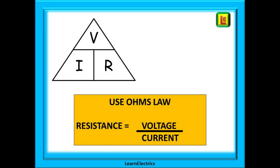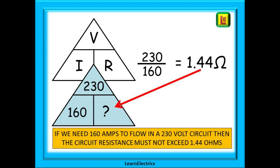A little bit of maths now. Ohm's law tells us that the resistance of a circuit equals the voltage divided by the current. We have shown here the familiar Ohm's law triangle. Inserting the two numbers that we know, we have 230V over 160A. We always use the nominal voltage for these calculations and not the actual measured voltage — it is the standard figure quoted in tables and books. So 230V divided by 160A gives us 1.44 ohms. If the resistance is equal to or less than 1.44 ohms then at least 160A of fault current will flow and the circuit will disconnect in 0.4 seconds or less.